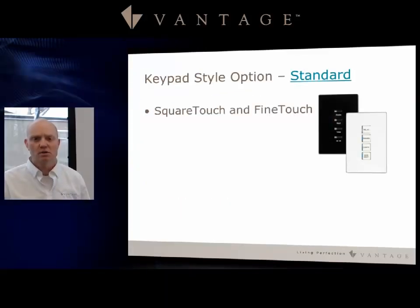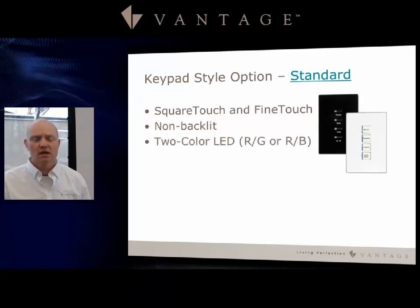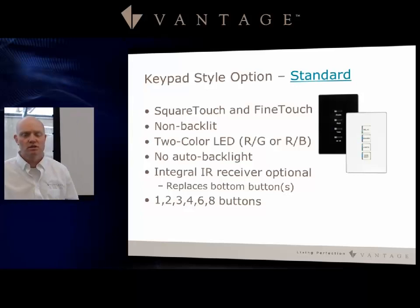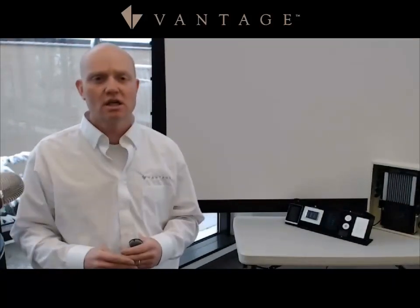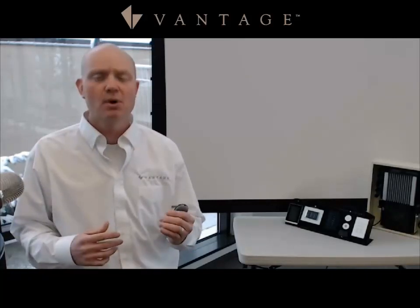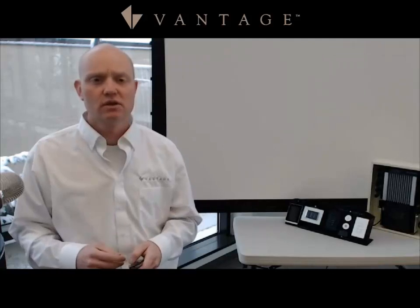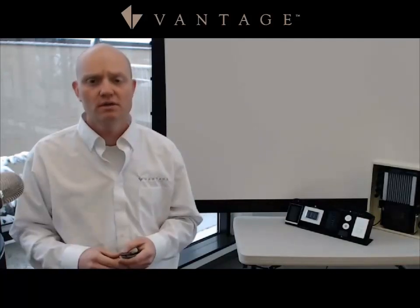The standard keypad option — the Square Touch and Fine Touch — is an older option we've had around for a while, but still great buttons. The LED is off to the side, so it is non-backlit engraved with two-color LEDs: either red-green or red-blue. There are no auto backlight settings in the software for this. It does have the ability to integrate an IR receiver, which would replace the bottom button. It's available in one, two, three, four, six, or eight buttons. If the IR receiver is integrated, you'd have a three-plus-receiver or six-plus-receiver configuration. This style is available with the Scene Point dimmers.